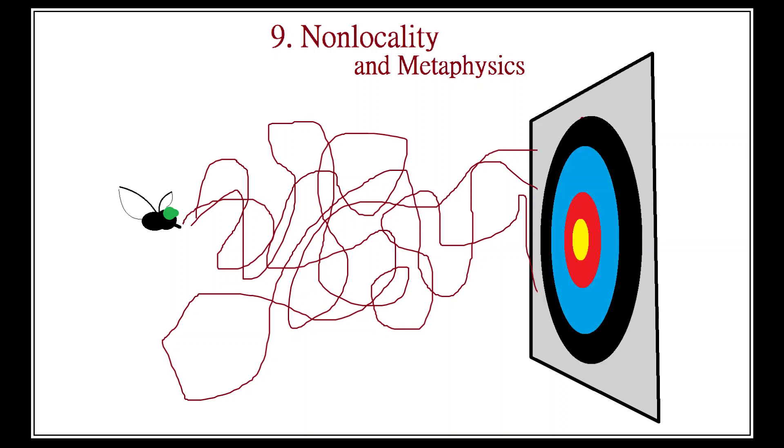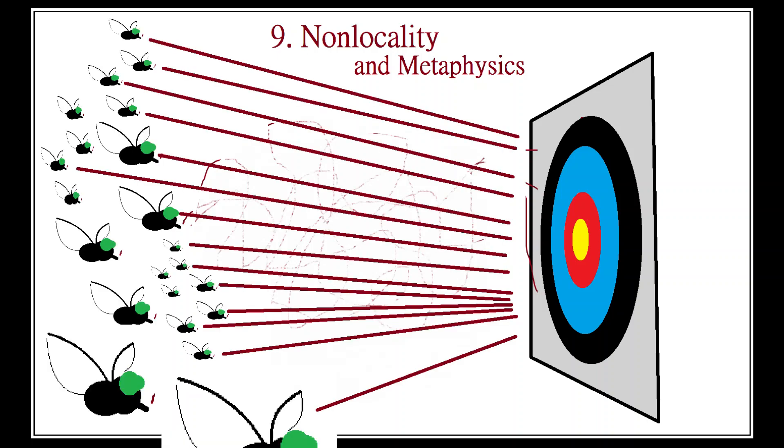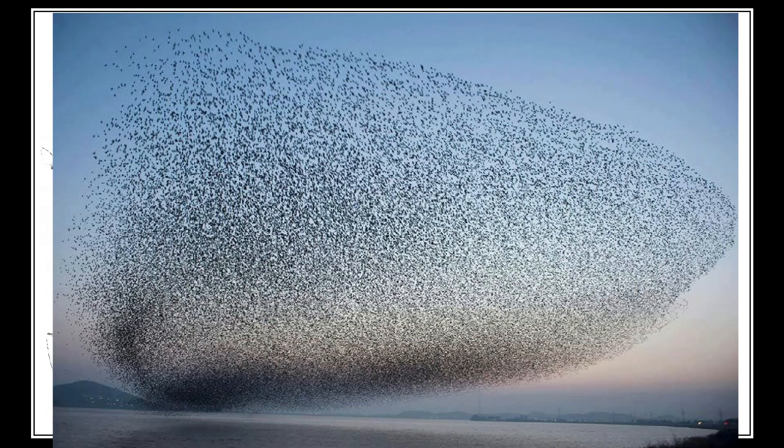Where Einstein and Bohr differed was in where to go with the theory from there. Bohr believed that the movement of the horsefly is fundamentally indeterminable, and before it hits the flypaper, it is better understood as a whole swarm of flies which mysteriously vanishes as soon as one actually hits the flypaper. The individual and its swarm are complementary. We can only understand the total phenomenon by switching back and forth between the two models.